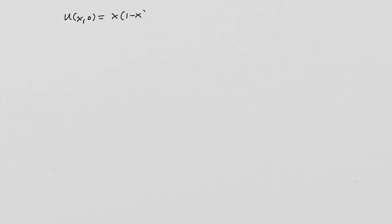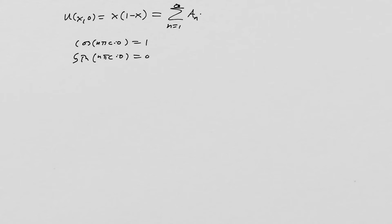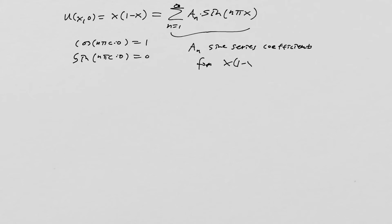We know U(X, 0) equals X times (1 minus X), and that equals the sum from N equals 1 to infinity. Since cosine(N pi C times 0) equals 1 and sine(N pi C times 0) equals 0, we get A_N times sin(N pi X). So we need a sine series — the A_N values are the sine series coefficients for X times (1 minus X).